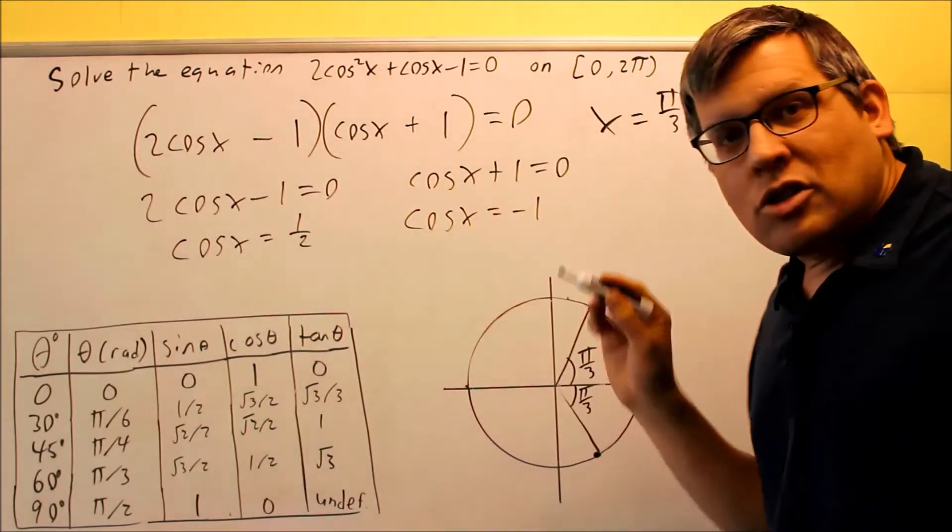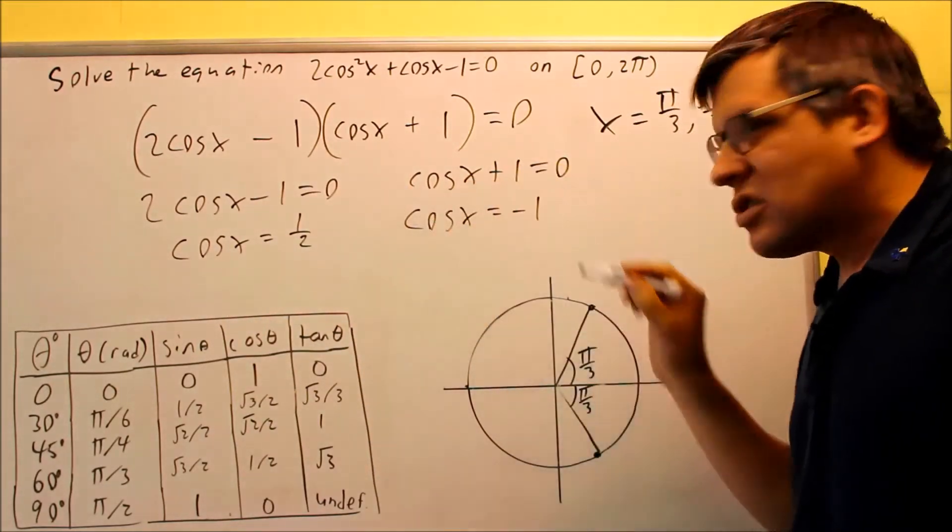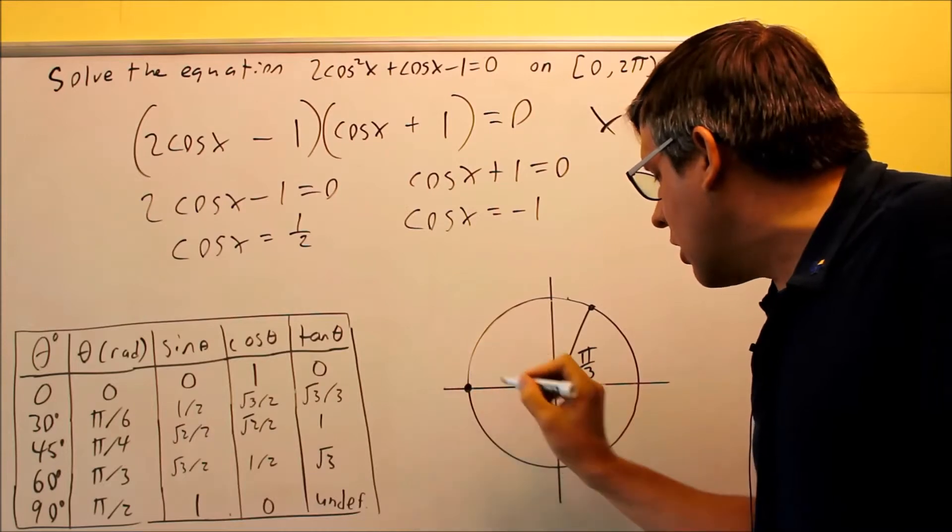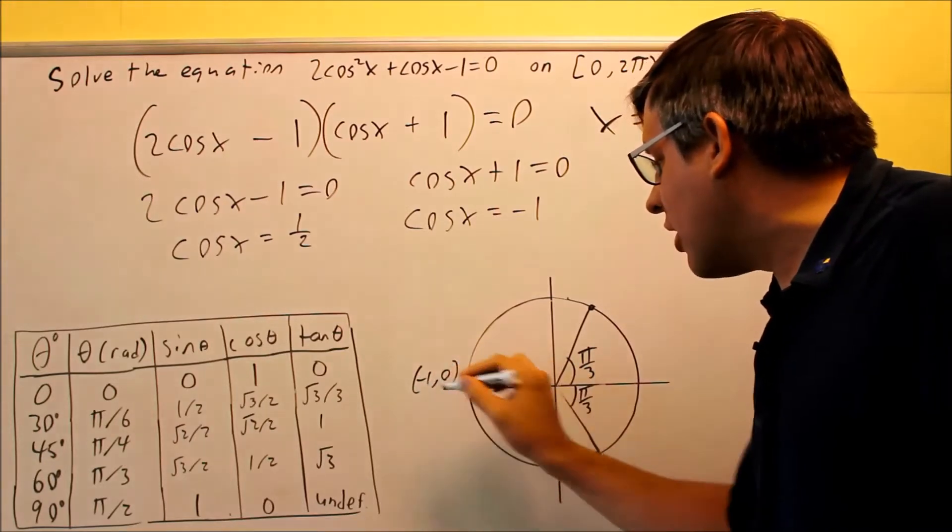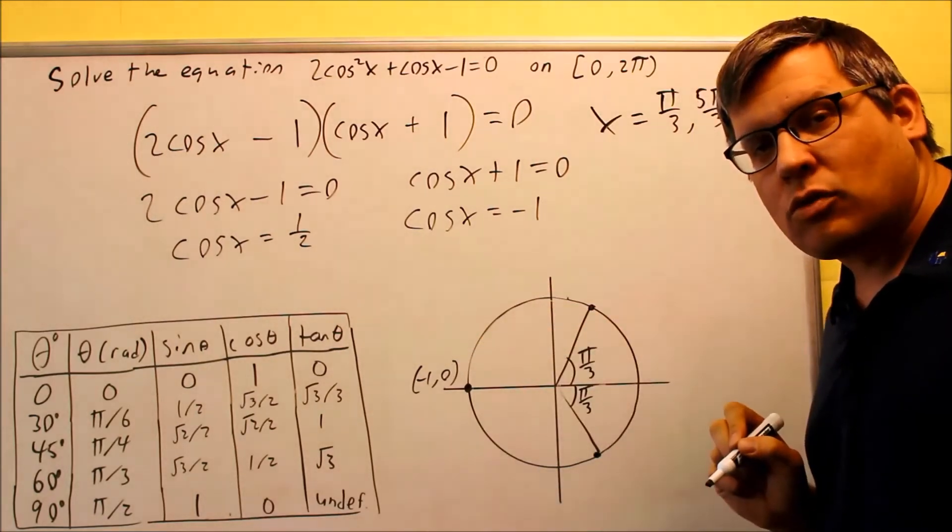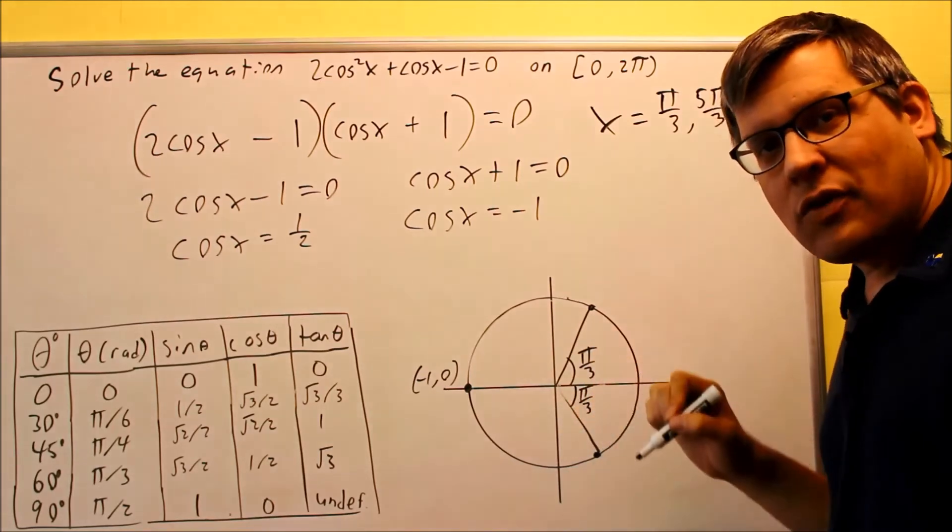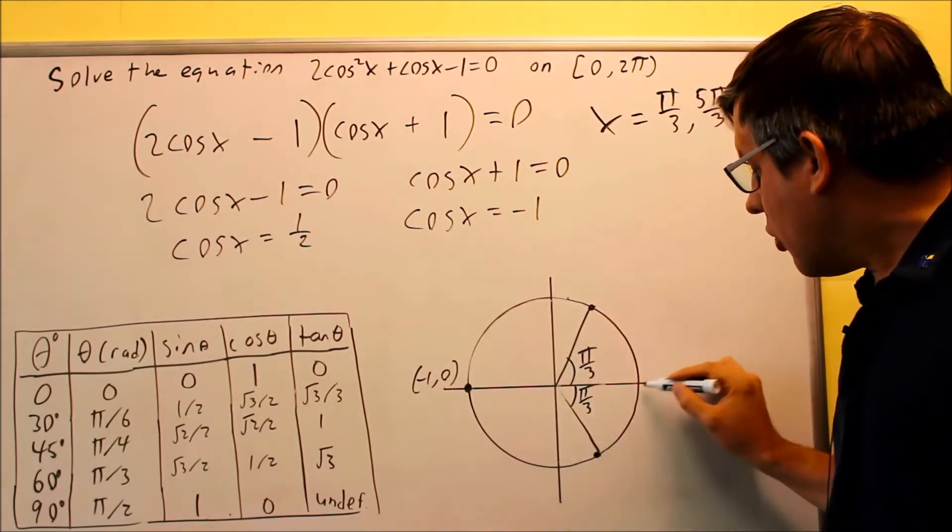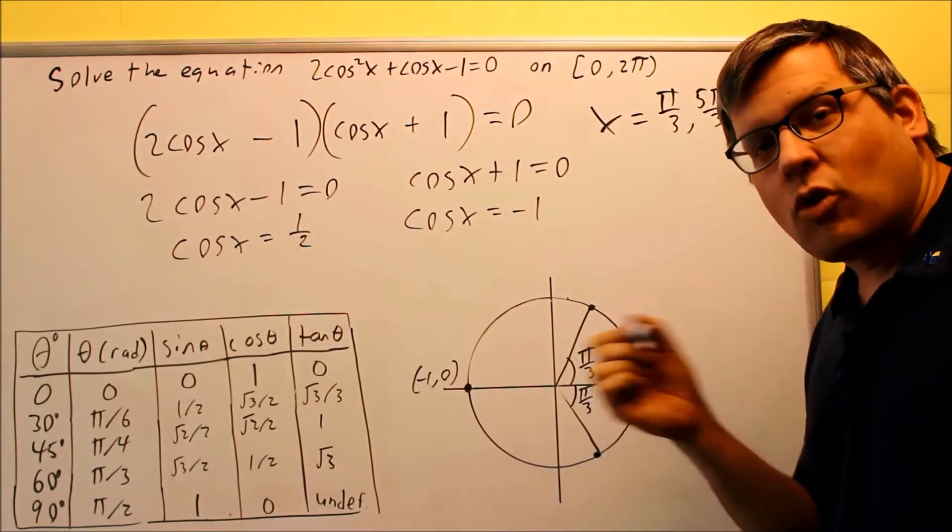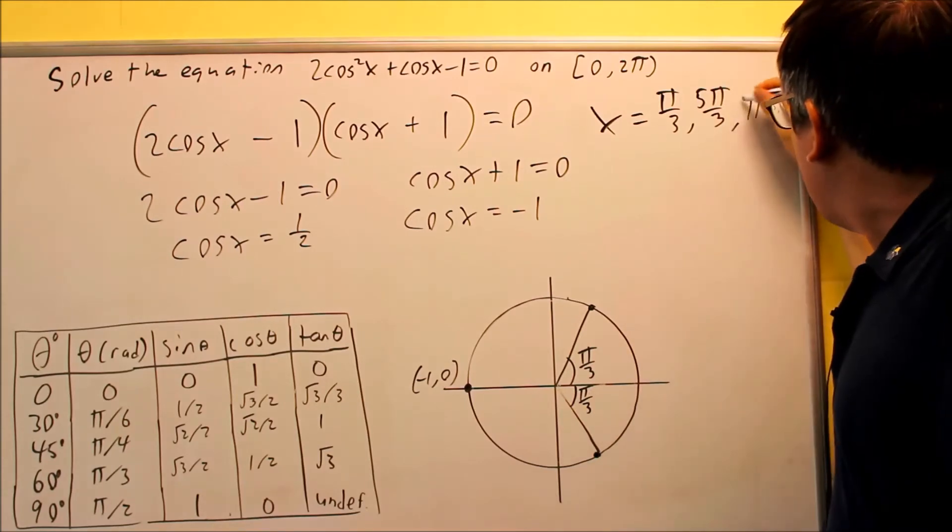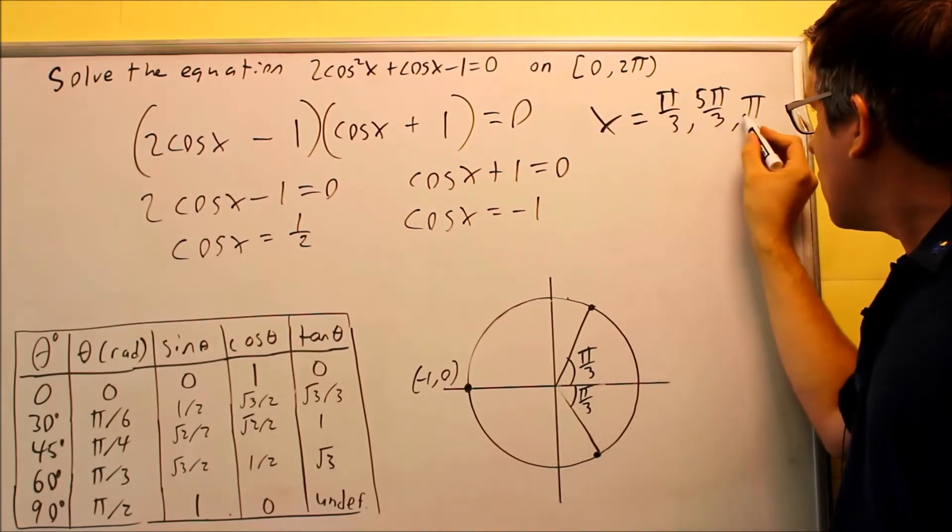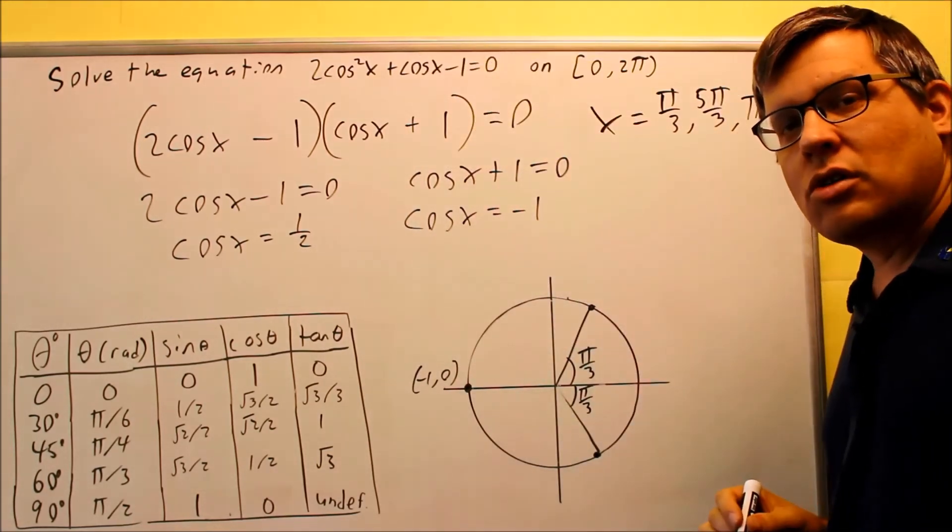Now, I'm done with the first equation but now I have to solve for the second equation. Cosine x equals negative one. That's going to be this spot on the unit circle right here because that's where the x value is equal to negative one. So on the unit circle, that's the only place where the x value is equal to negative one. The rest of them, we looked at that in the previous example. The x value is zero and here the x value would be positive one. So this angle right here, that would be at 180 degrees or pi. So that would be my last solution. So for this particular problem, I have three solutions. And if I were to plug any of these answers back into the original equation, I should get zero as the answer.